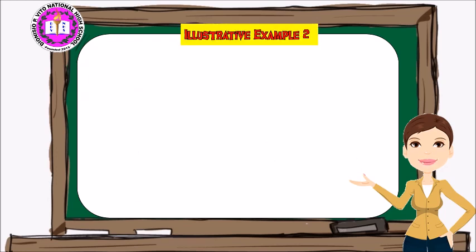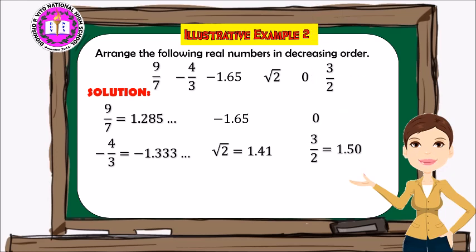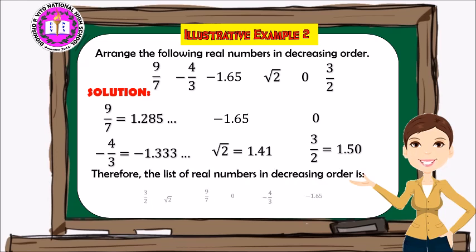Let's have another example: arrange the following real numbers in decreasing order. Solution: 9 over 7 equals approximately 1.285, negative 4 over 3 equals approximately negative 1.333, negative 1.65, the square root of 2 equals approximately 1.41, zero, and 3 over 2 equals 1.50. Therefore, the list in decreasing order is: 3 over 2, square root of 2, 9 over 7, zero, negative 4 over 3, and negative 1.65.